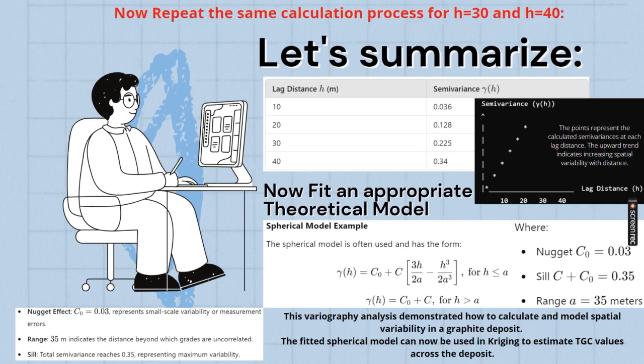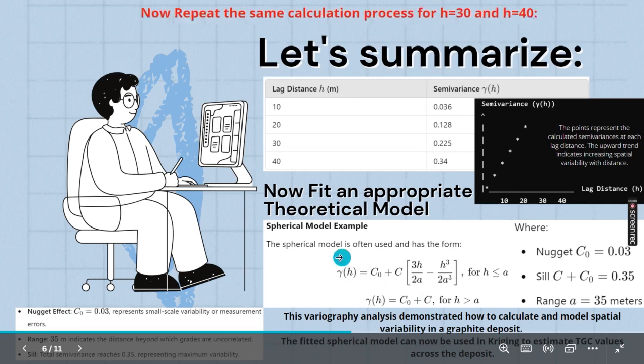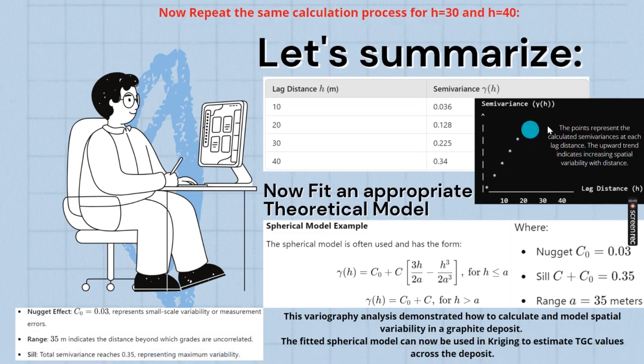Even if we see in Tanzania, graphite is more. Tanzania is having a good graphite belt. As we proceed from center of Tanzania towards another country, then also we can get graphite. Then after a certain distance, nothing. Even if there is a mobile belt, we will not be getting. That way we will have to understand these things. Anyway, for that, good enough video is available. This nugget effect, sill, range, these concepts are very important in construction of variogram.